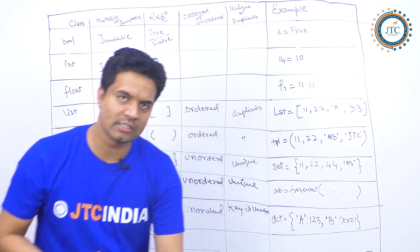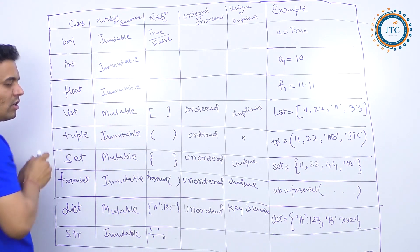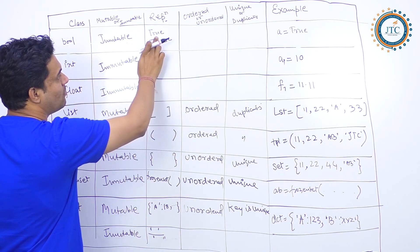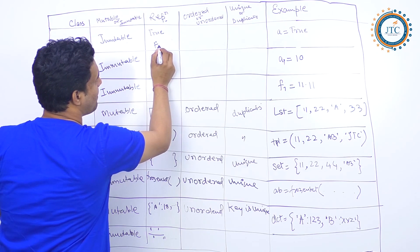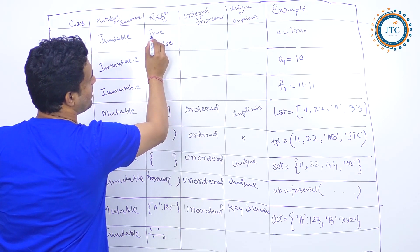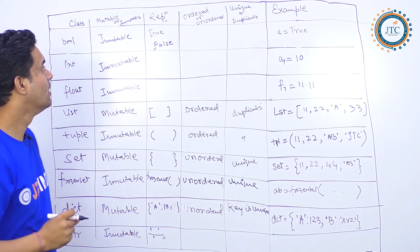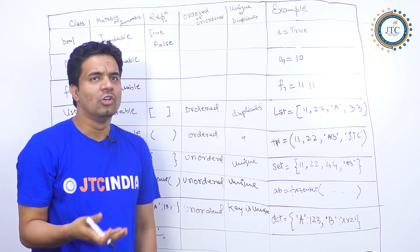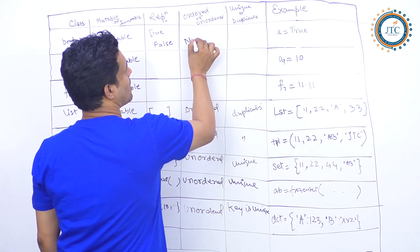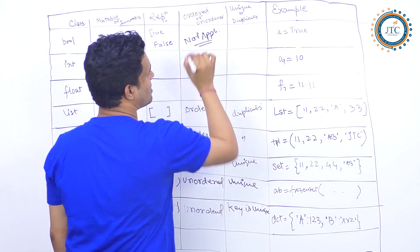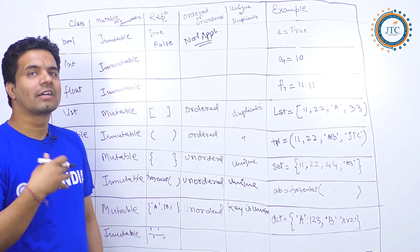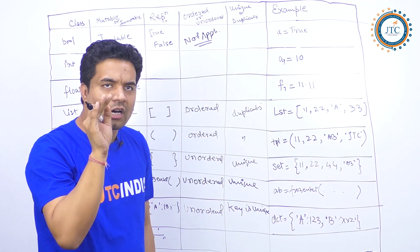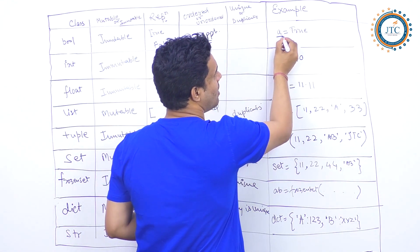Number one: boolean. Boolean is immutable. In boolean we talk about True and False — remember, in Python True and False are written with a capital letter, and they are also in the list of keywords. Boolean does not store a collection of elements, so ordered/unordered and unique/duplicacy are not applicable here.